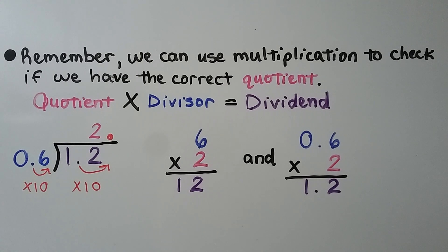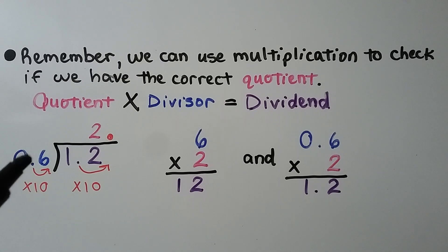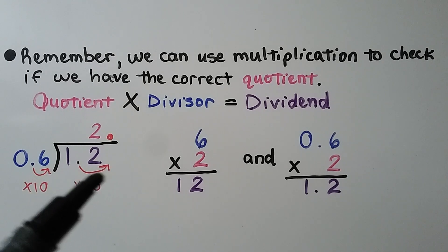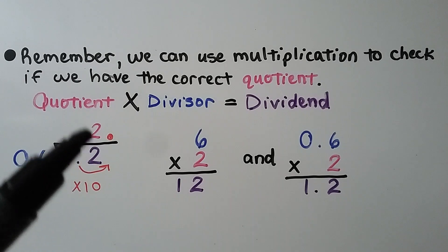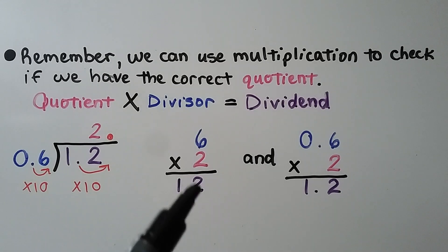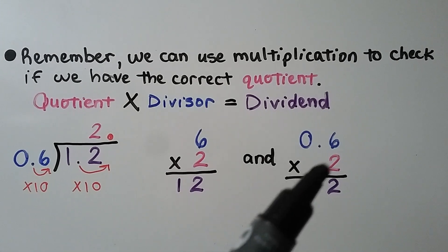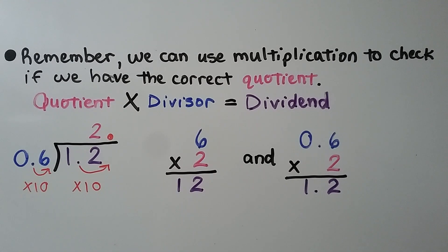Remember, we can use multiplication to check if we have the correct quotient — the quotient times the divisor should equal the dividend. Multiplication is the inverse of division. For example, 1 and 2 tenths divided by 6 tenths: multiply by 10 to get 12 divided by 6, which equals 2. And 6 times 2 is 12, confirming the correct quotient. We could also check: 6 tenths times 2 equals 1 and 2 tenths.